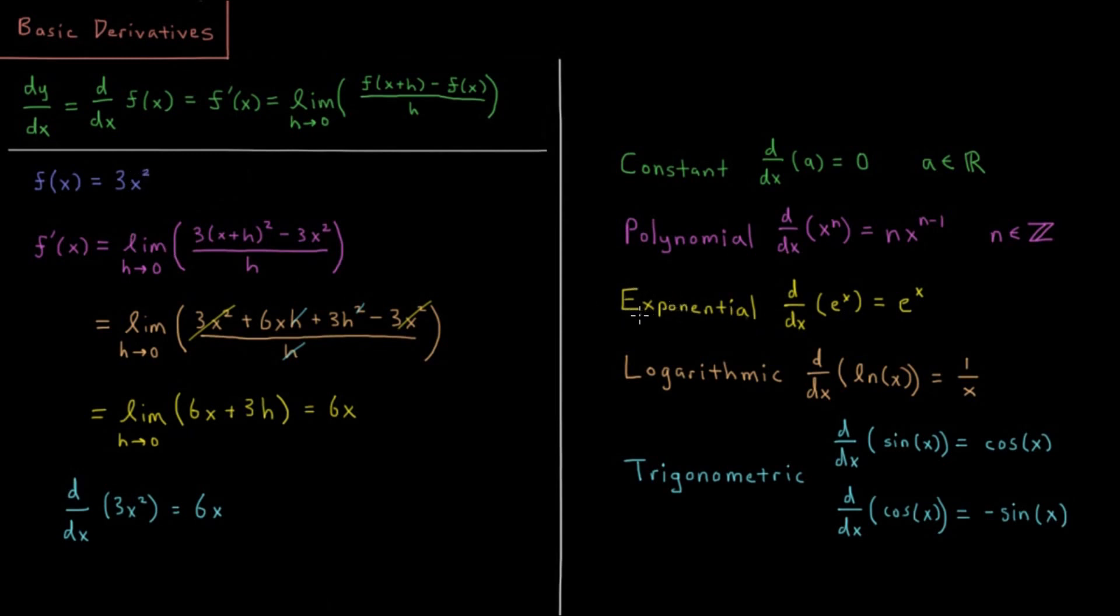Exponential. The easiest derivative to do is its own derivative. Derivative of e to the x is just e to the x. For logarithms, the derivative of log x is equal to 1 over x, a special case to keep in mind there.